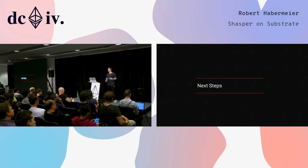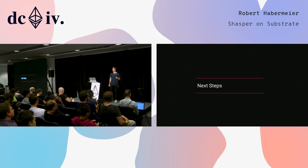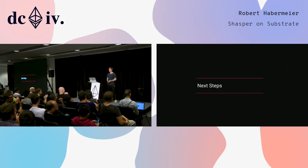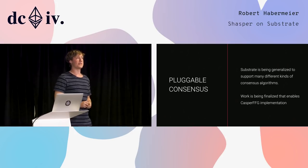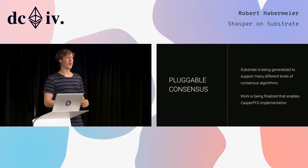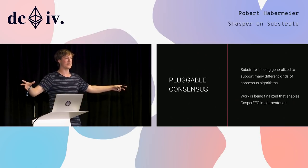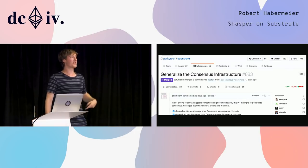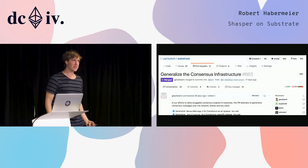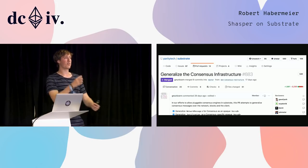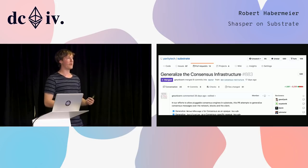As for the next steps in the implementation side of things for Ethereum 2.0: Parity is 100% committed to finishing the Ethereum 2.0 implementation. The next step will be better pluggable consensus. Just in the past few days, we merged the commits into Substrate that generalize the consensus framework. What's next is to implement Casper FFG on Substrate, and to start the block authorship work so that not just processing the blocks is done on our Shasper repo, but actually authoring them as well.